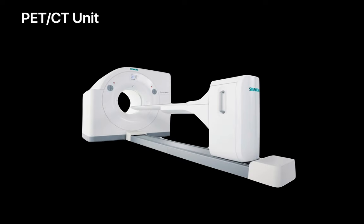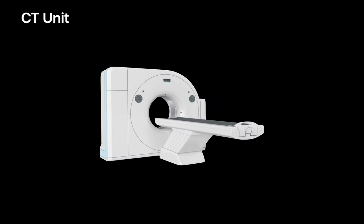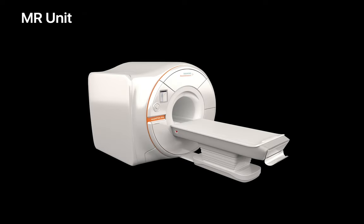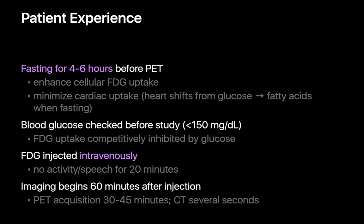Let's look at how this process plays out in the clinical setting with a real patient. The gamma-ray detectors, the table the patient lies on, and other hardware are all housed in a unit that looks similar to a CT unit and a little like an MR unit. Patients are usually instructed to fast for several hours before a PET study. This helps enhance cellular FDG uptake by minimizing competitive inhibition from too many glucose molecules floating around. Fasting also prevents the heart muscle from snatching too much FDG out of the bloodstream, since fasting shifts myocardial metabolism away from using glucose as a fuel source and to fatty acids instead.